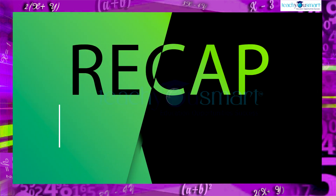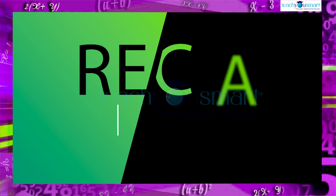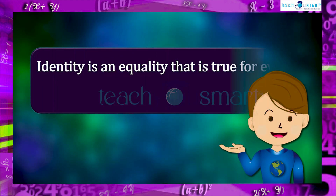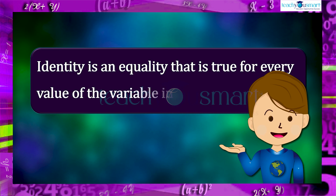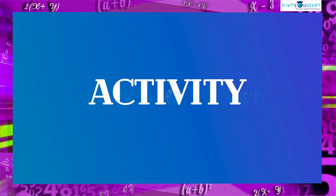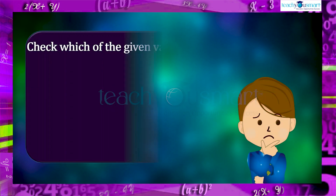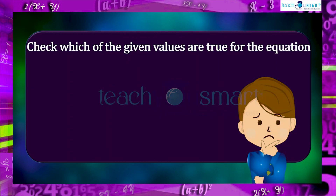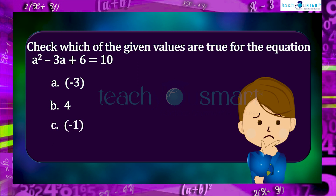Let's recall what we discussed today: an identity is an equality that is true for every value of the variable in it. Before winding up, let's check how much you understood by doing an activity: check which of the given values — -3, 4, -1, and 2 — are true for the equation a² - 3a + 6 = 10.